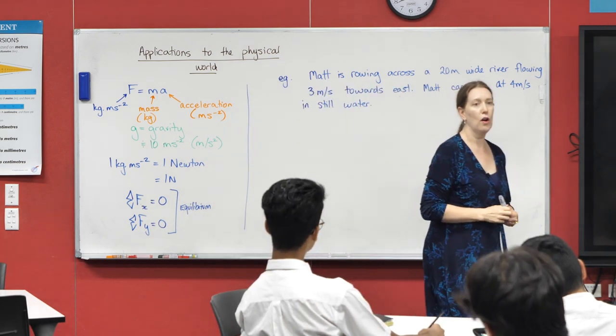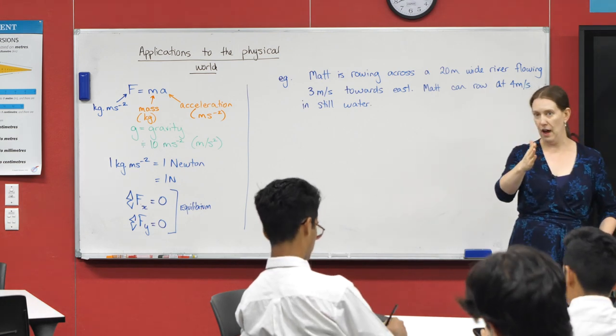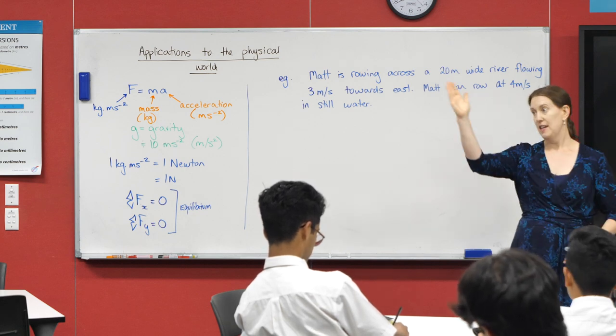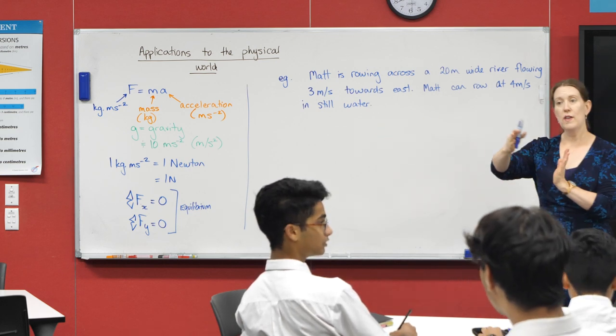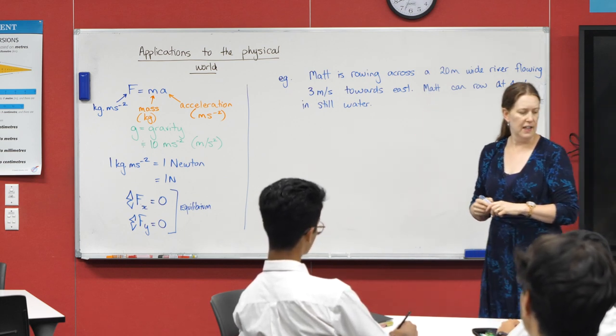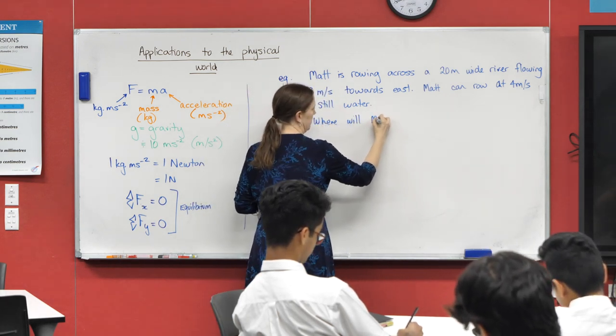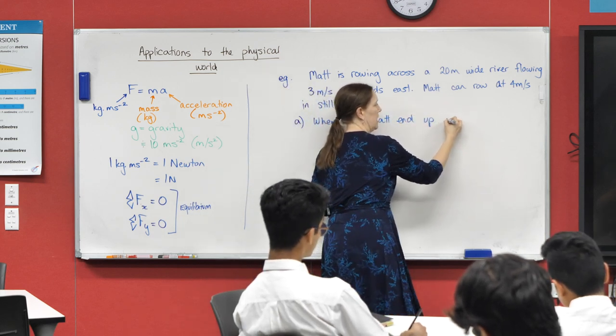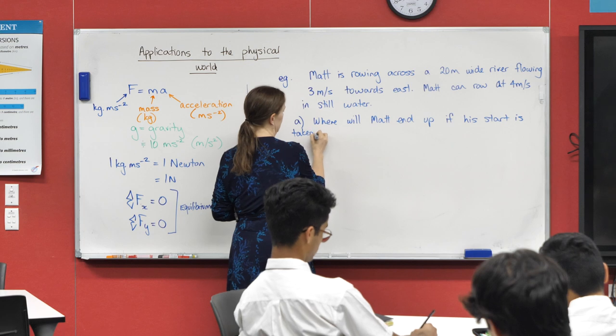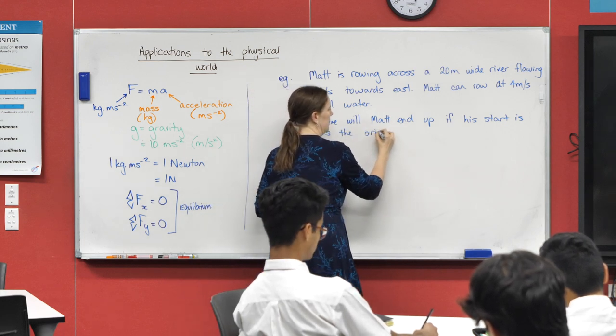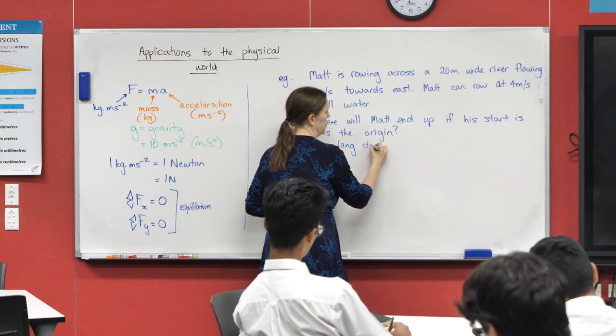So we've got a scenario and they'll often be given to you in a lot of words. So can you imagine Matt sitting in his rowboat, river's going that way, he wants to go that way. Which way is he actually going to be going? He's going to be heading that way, do you agree? Because the river is going to be pushing him down. Okay, so we know that he drifts horizontally. What we want to find is where will Matt end up if his start is taken as the origin, and how long does his journey take him?